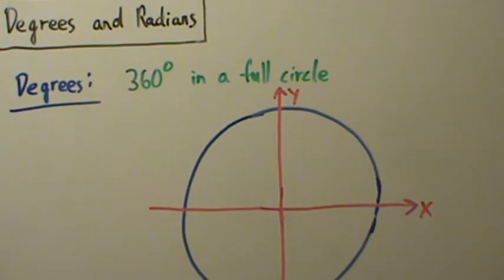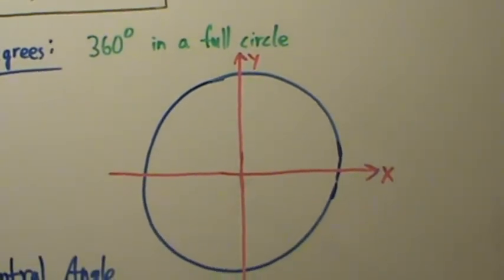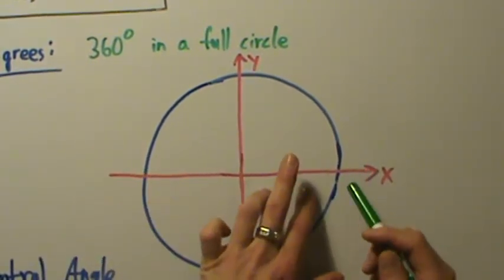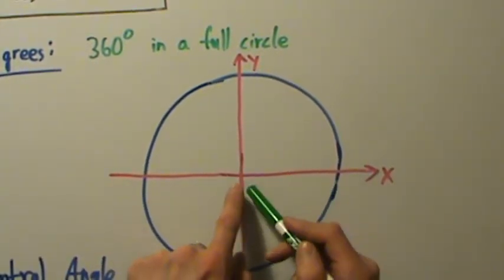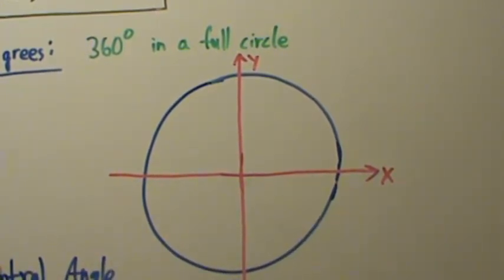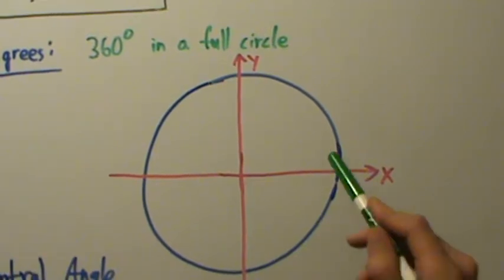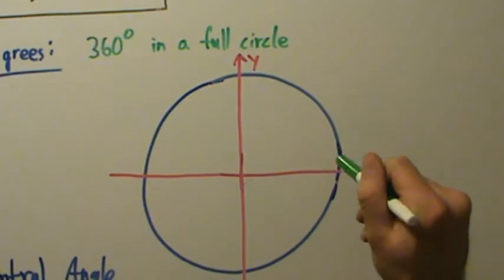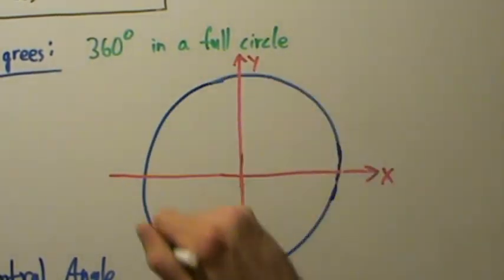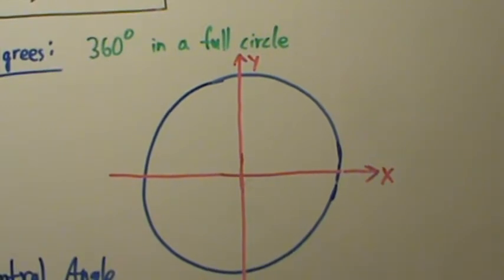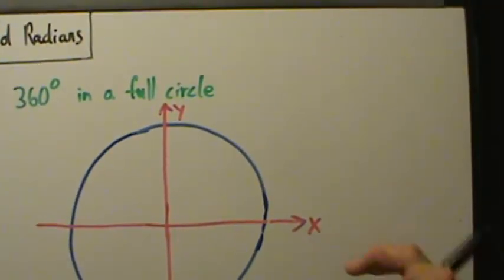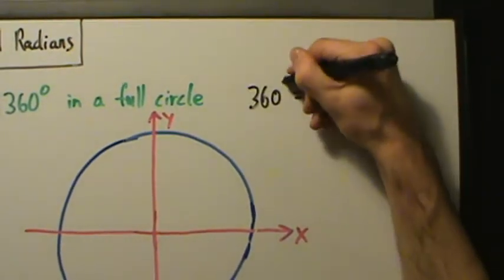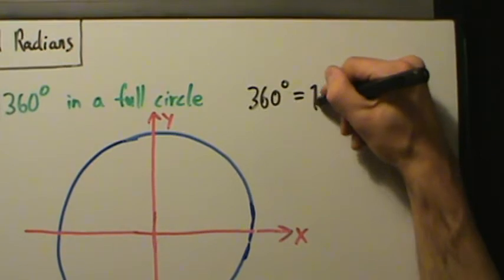Now, it doesn't matter how big the circle is — the radius could be tiny or huge — no matter what the radius is, there are 360 degrees in the entire circle. So if you start anywhere on the circle and trace out one complete revolution, that's 360 degrees.